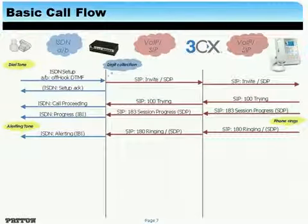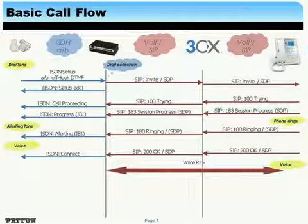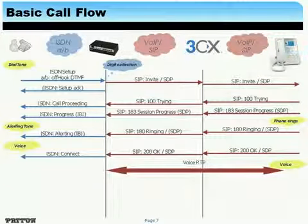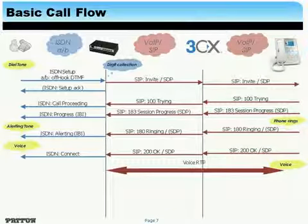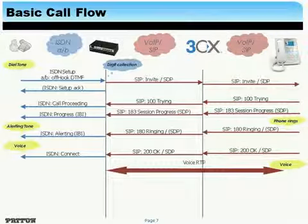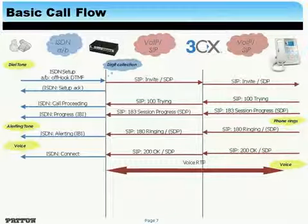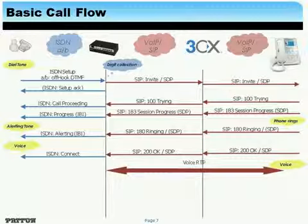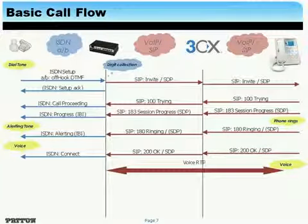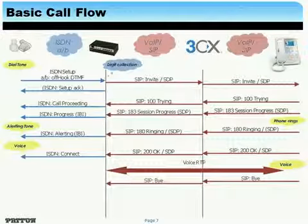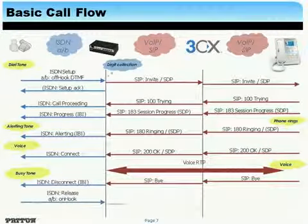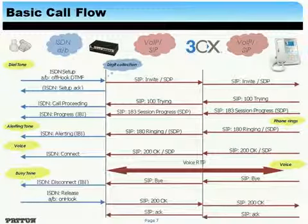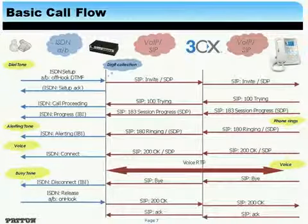When the person at the SIP telephone on the right picks up the phone, a SIP 200 OK message is sent back to the gateway. The gateway converts that into an ISDN connect message, which causes the audio path to be switched on. We will have voice in the RTP stream between the phone and the gateway, and the gateway will translate all the voice into the ISDN PCM standard. If the phone is hung up on one side, it's a SIP BYE message that is sent, which is translated by the gateway into an ISDN disconnect message, and the call is finished.